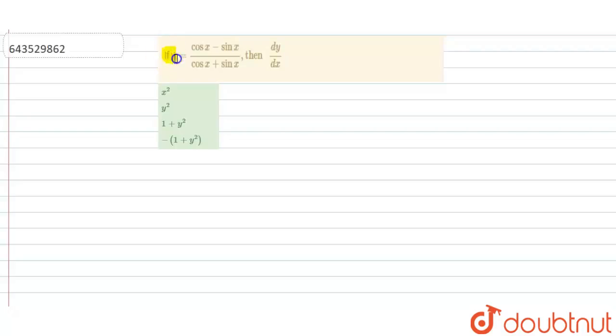The question is, if y is equal to cos x minus sin x upon cos x plus sin x, then dy by dx is.